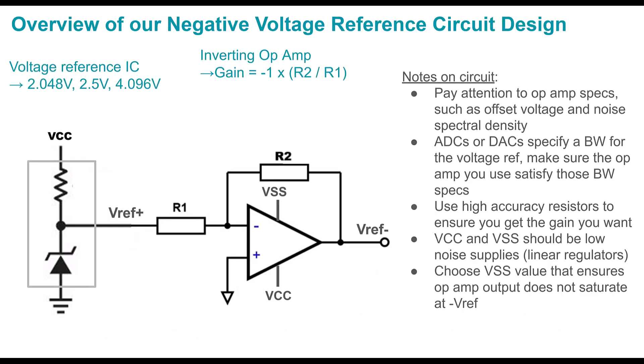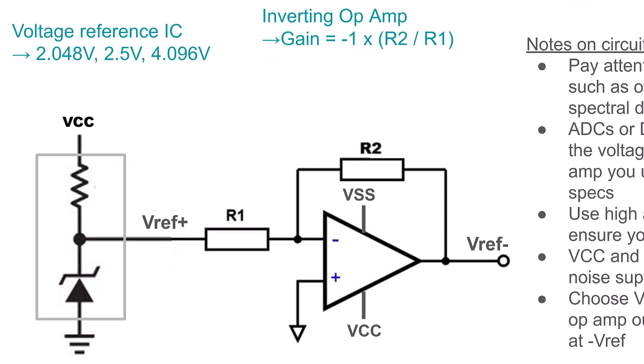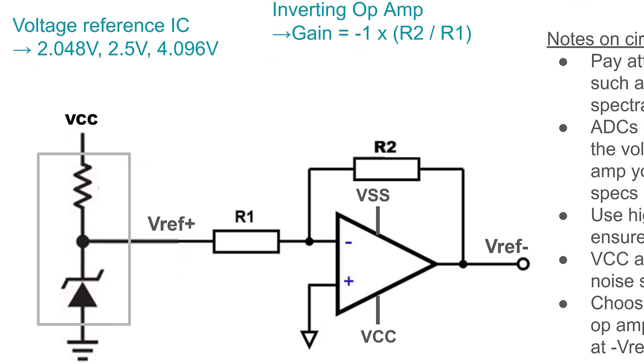Here is the high-level circuit. To generate a precision negative voltage reference, we start with a positive voltage reference — it could be 2.048 volts, 2.5 volts, or other values. I'm representing the voltage reference IC with a resistor and precision Zener diode symbol. These are common values for voltage references, but you can use any positive reference value.